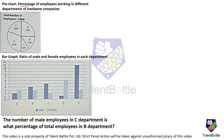The pie chart gives the percentage of employees working in different departments of hardware companies. The total number of employees is 14,000. The bar graph gives the ratio of male and female employees in each department. The question is: the number of male employees in C department is what percentage of total employees in B department?